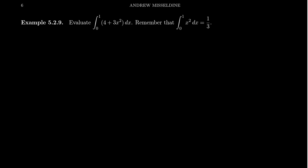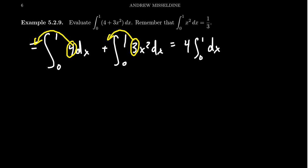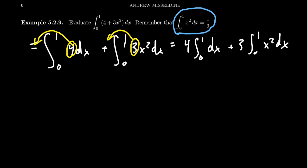Let's calculate the integral from 0 to 1 of (4 + 3x²) dx. By properties of integration, we break this into two integrals: the integral from 0 to 1 of 4 dx, plus the integral from 0 to 1 of 3x² dx. The integral of a sum is the sum of integrals. Then the constant coefficients come out in front: 4 times the integral from 0 to 1 of dx, plus 3 times the integral from 0 to 1 of x² dx. From a previous calculation, the integral from 0 to 1 of x² equals one third.